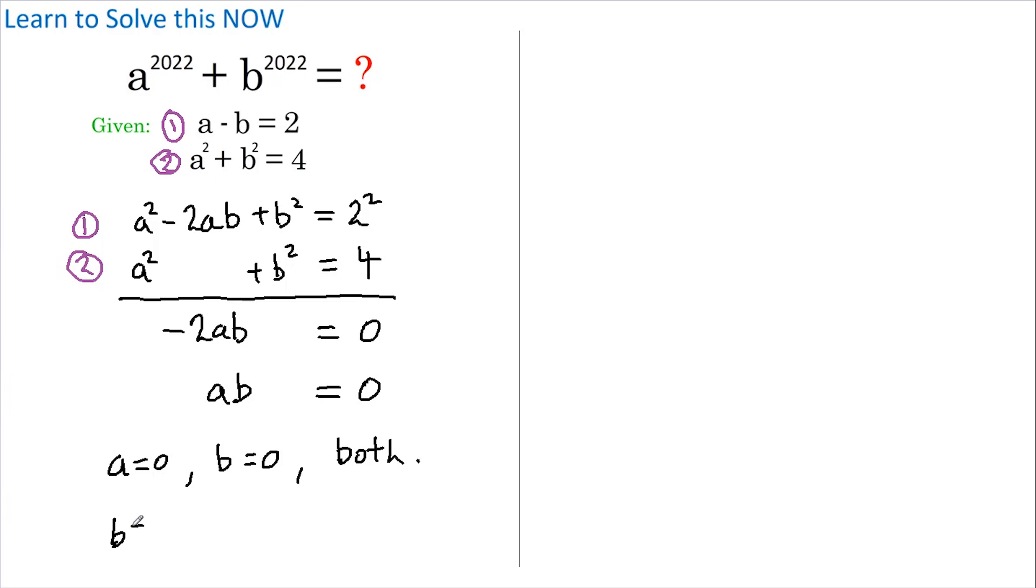If b equals 0, then a must equal 2. And if both equal 0, well that's not possible because equation 1 wouldn't equal 2.